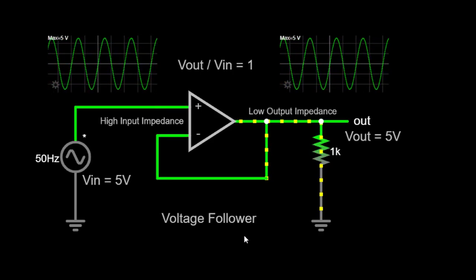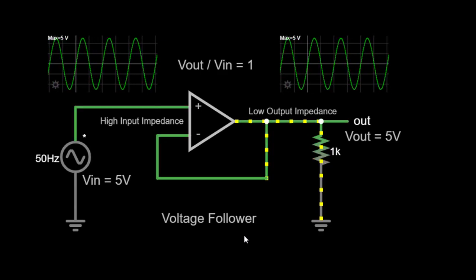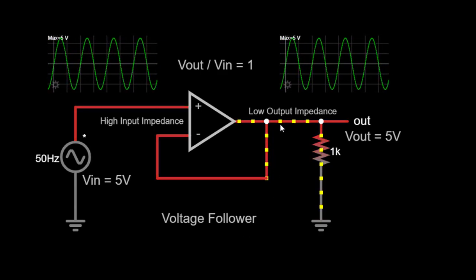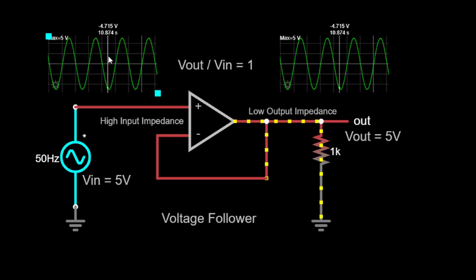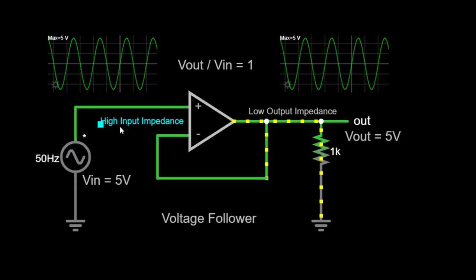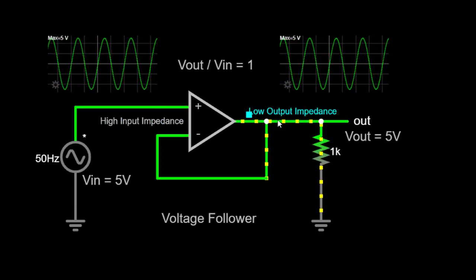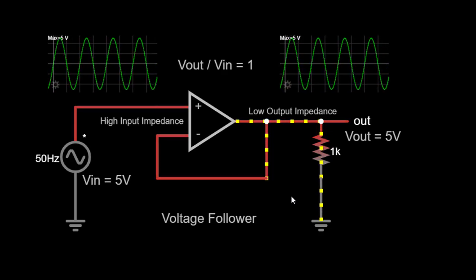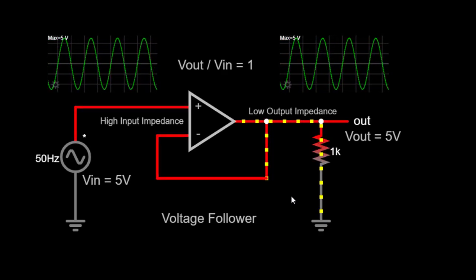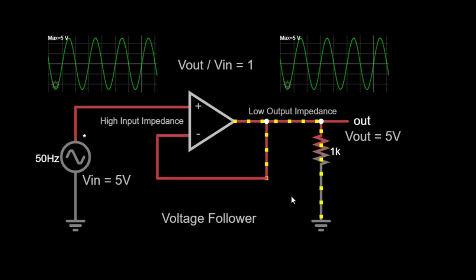A voltage follower is an amplifier circuit that produces an output voltage that exactly replicates the input voltage. It achieves this by having a high input impedance and a low output impedance. The primary purpose of a voltage follower is to provide electrical isolation between different parts of a circuit while maintaining the same voltage level.